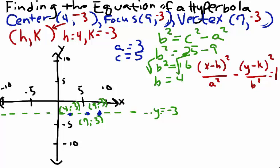Now, plugging in our values, we have (x - 4)² divided by a squared, which is 9, minus (y - k)² where k is equal to negative 3, so (y - (-3)) gives us (y + 3)² divided by 16 equals 1.